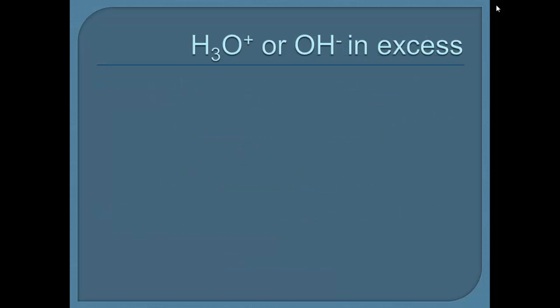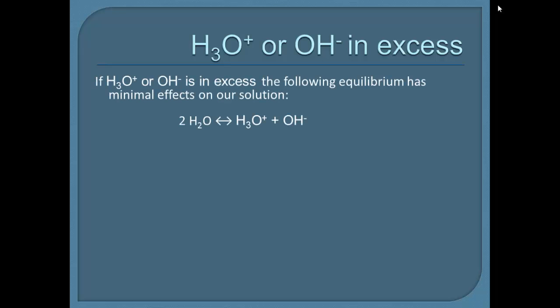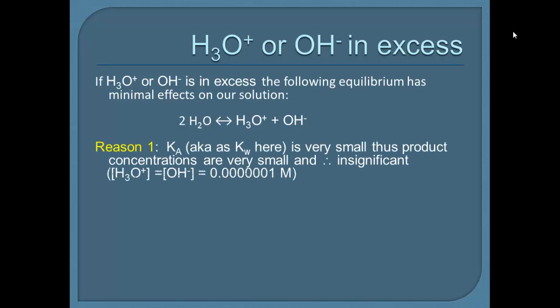So, let's look at some examples where we're going to have either H3O+ or OH- in excess. First of all, we just have to explain what is happening. So we kind of revisited this equilibrium that we talked about, H3O+ or two water molecules in equilibrium with H3O+ and OH-. But our statement here says, if H3O+ or OH- is in excess, the following equilibrium has minimal effects on our solution. And this is why.